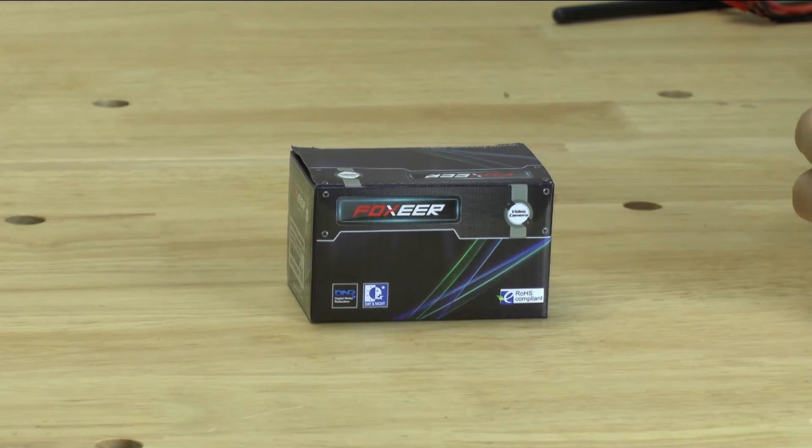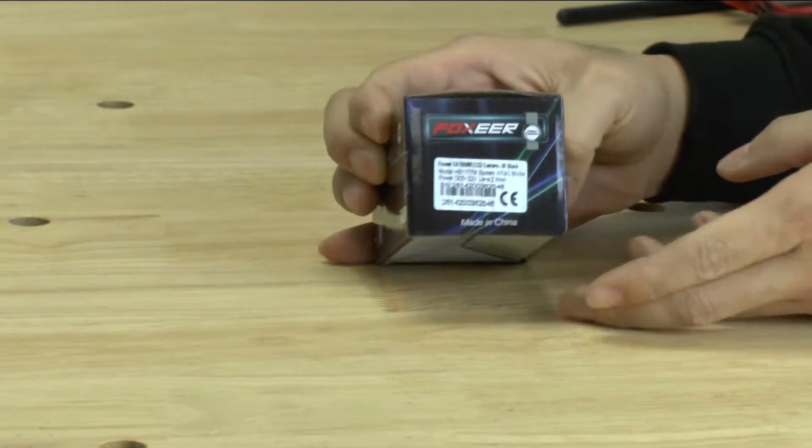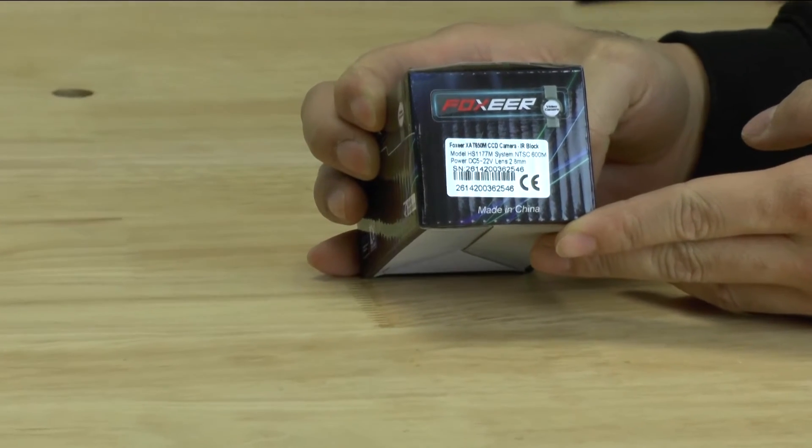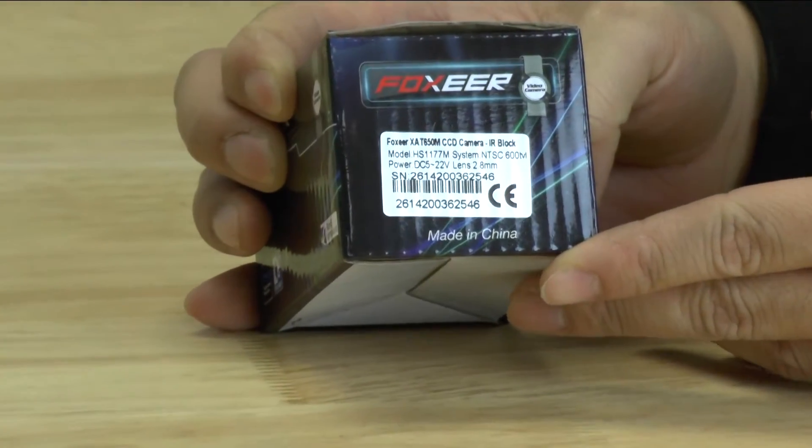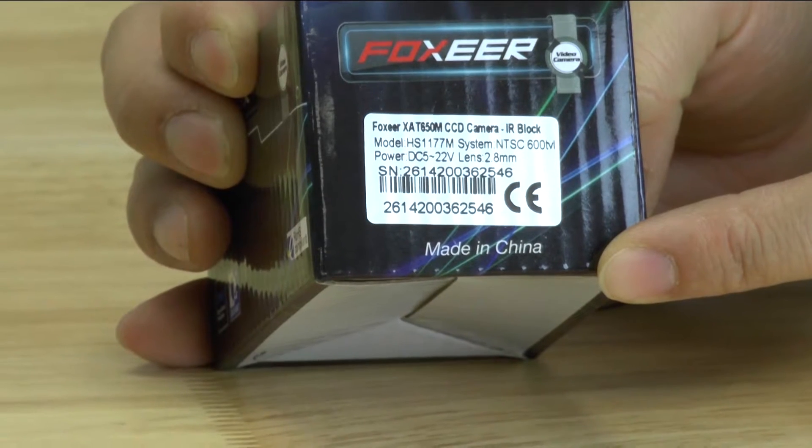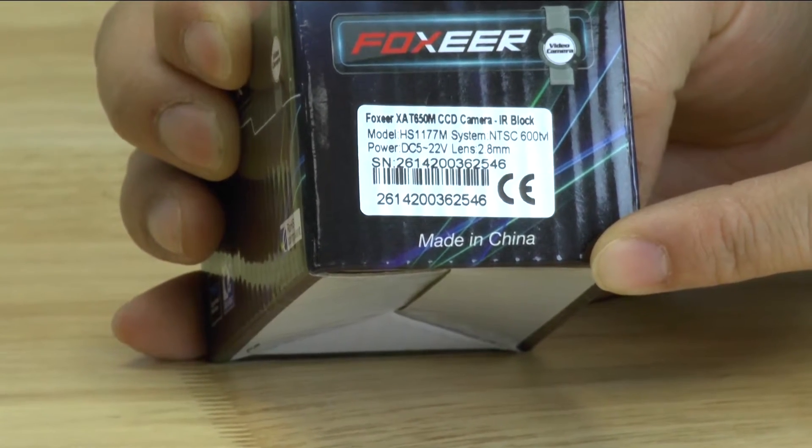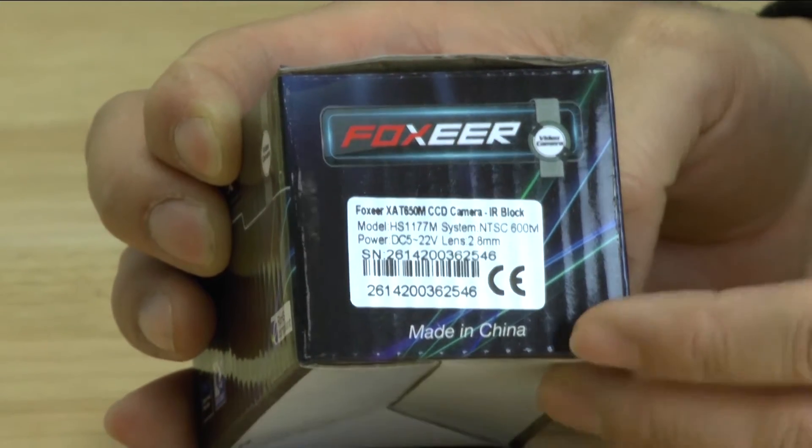Hello, my name is YLAM and today we'll be looking at this camera which is the HS1177M. This is the miniature version of the popular HS1177 which comes in a plastic case.